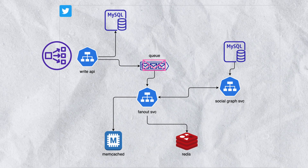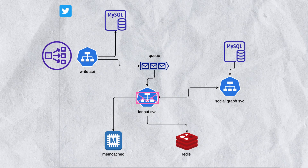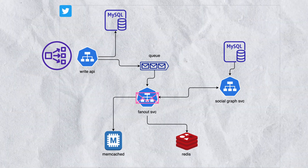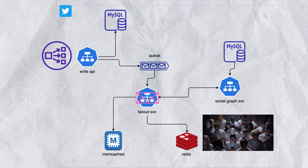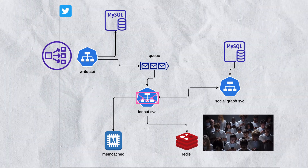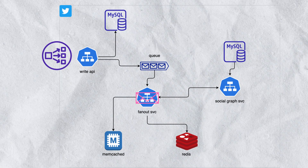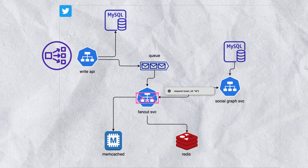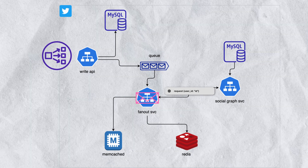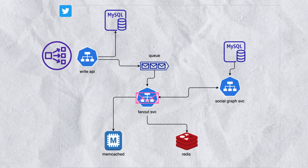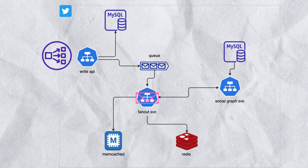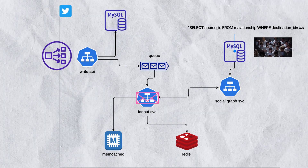The message will eventually be consumed by this fanout service. The fanout service is going to be responsible for distributing this tweet to the home timelines of all of the users that follow the user that sent the tweet. It's going to send a request to this social graph service and give it the user ID of the person that sent the tweet, asking it to query all of the users that follow that person.